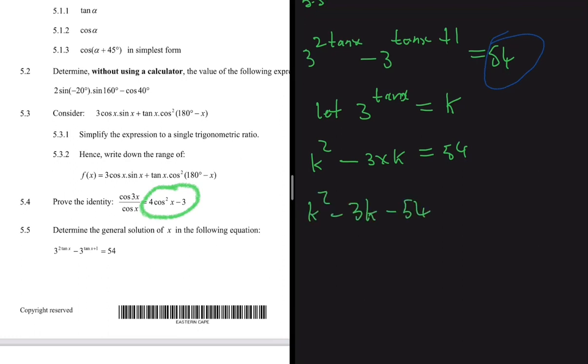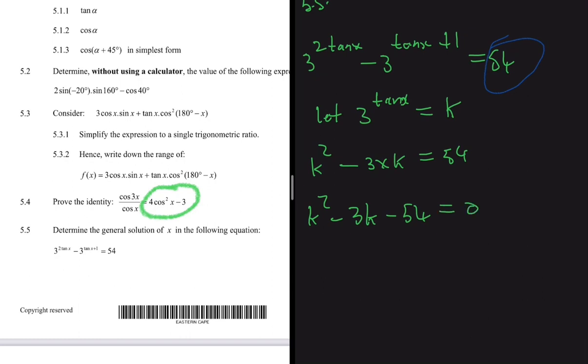Now we can factorize this. The question I ask myself when factorizing: which two numbers do I multiply and get -54, and when I add them I get -3? Factors of 54 that work are 9 and 6, so we have -9 and 6.